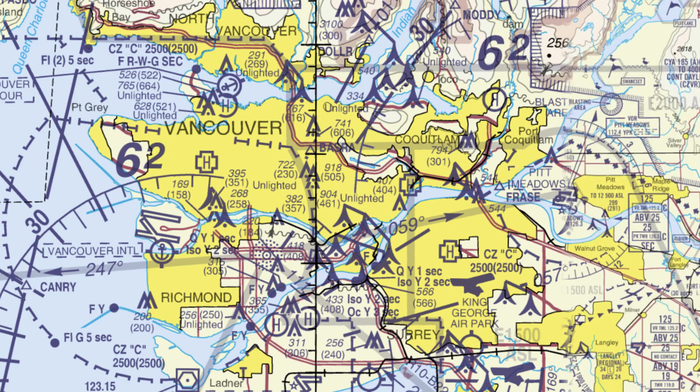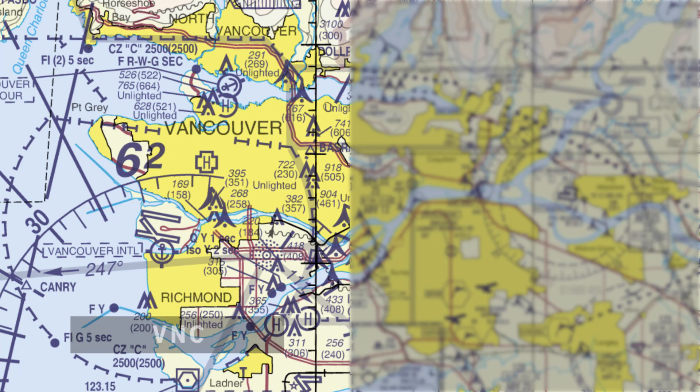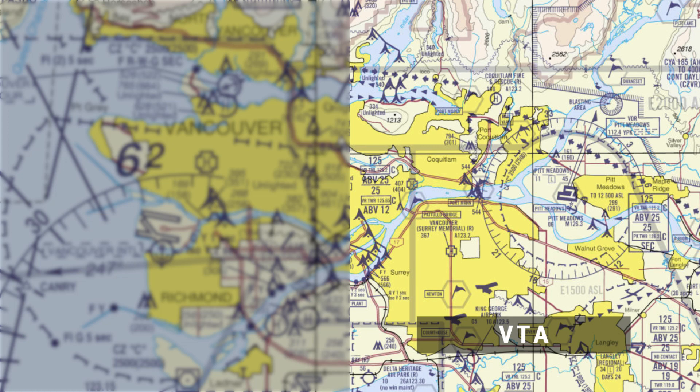VTAs are VFR Terminal Area Charts. They are zoomed-in charts of busier areas of airspace on a scale of 1 to 250,000. This means a line of longitude or latitude is drawn at every quarter degree, or 15 minutes. Winnipeg, Toronto, Ottawa, Montreal, Vancouver, Calgary, and Edmonton have VTAs. You'll notice a huge difference trying to pull information from a cluttered VNC and then switching to a VTA for these areas.